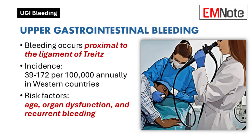Upper gastrointestinal bleeding refers to bleeding that originates proximal to the ligament of Treitz. Its annual incidence in Western countries ranges from 39 to 172 cases per 100,000 individuals. Factors that increase the risk of morbidity and mortality include advancing age, pre-existing organ dysfunction, and recurrent episodes of hemorrhage.